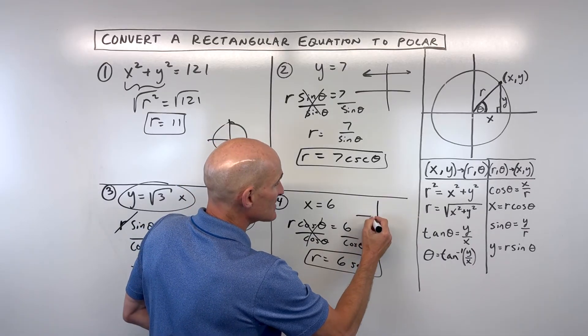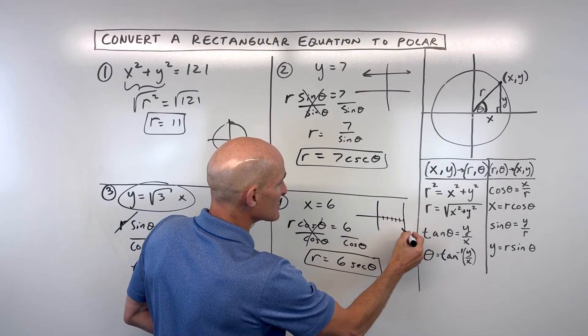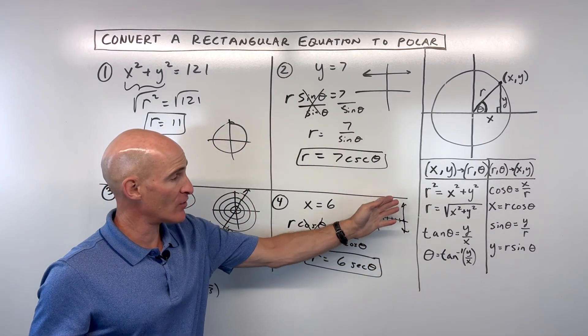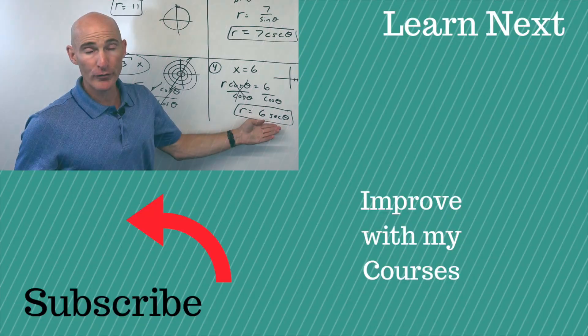Remember, x equals 6. This is a vertical line, like this. So x equals 6, a vertical line. But this is also the same vertical line. It's just that this equation is in polar form.